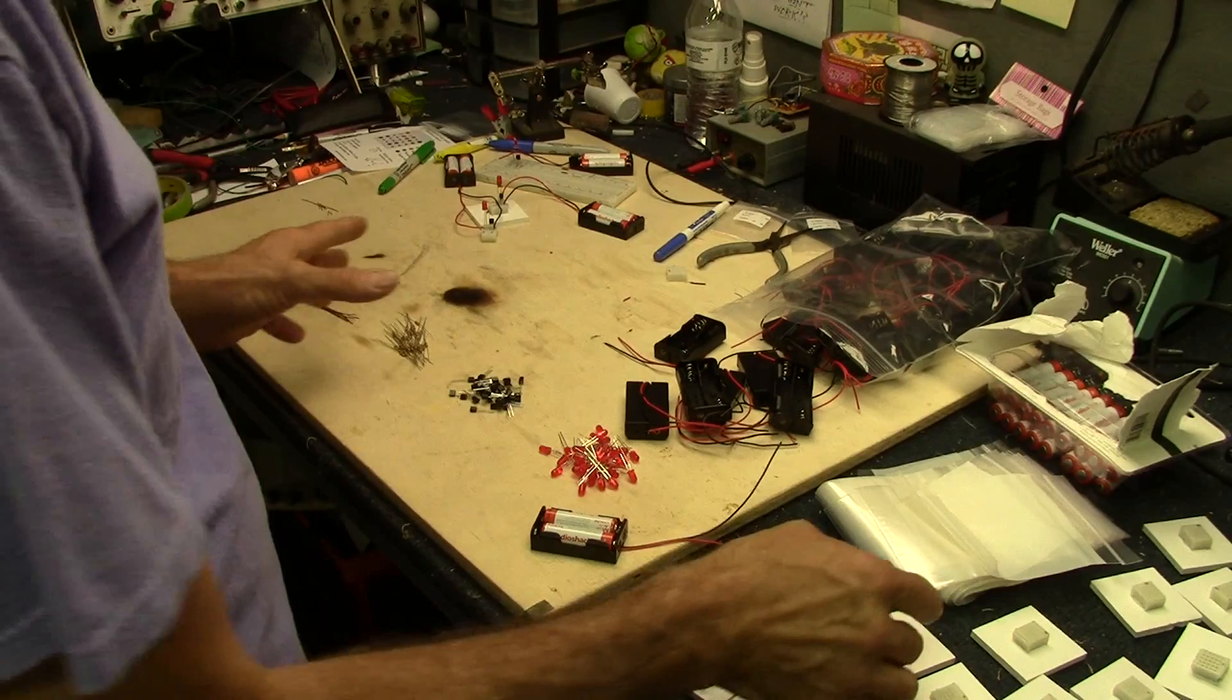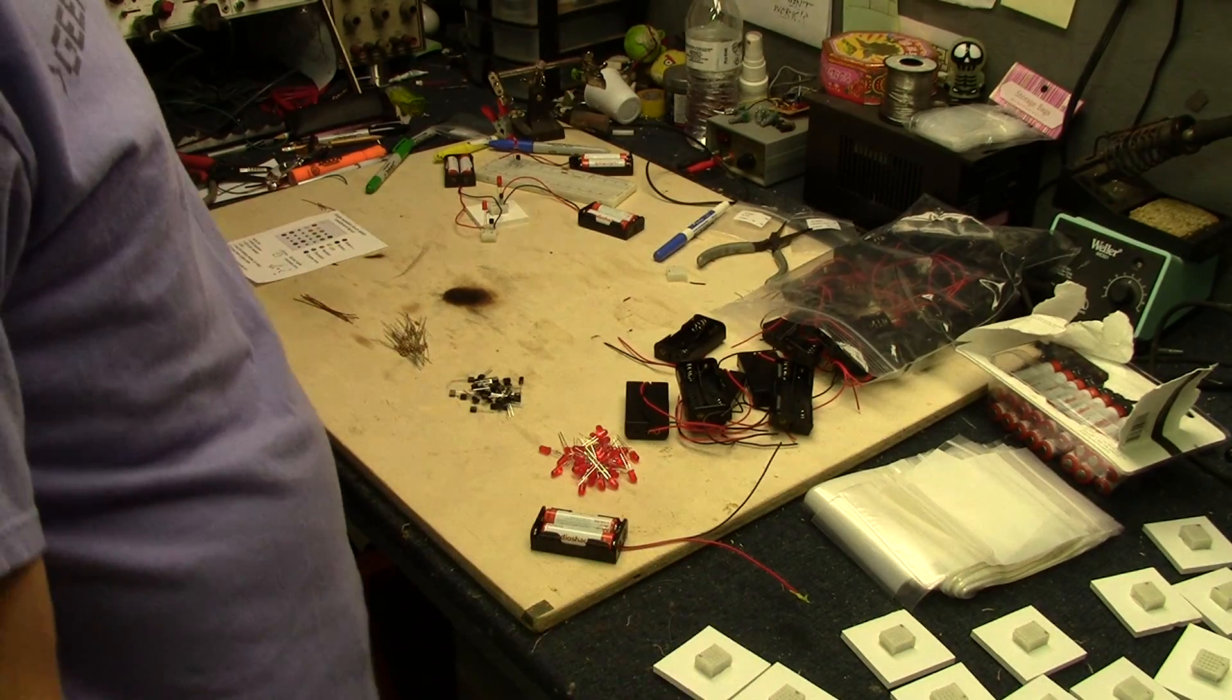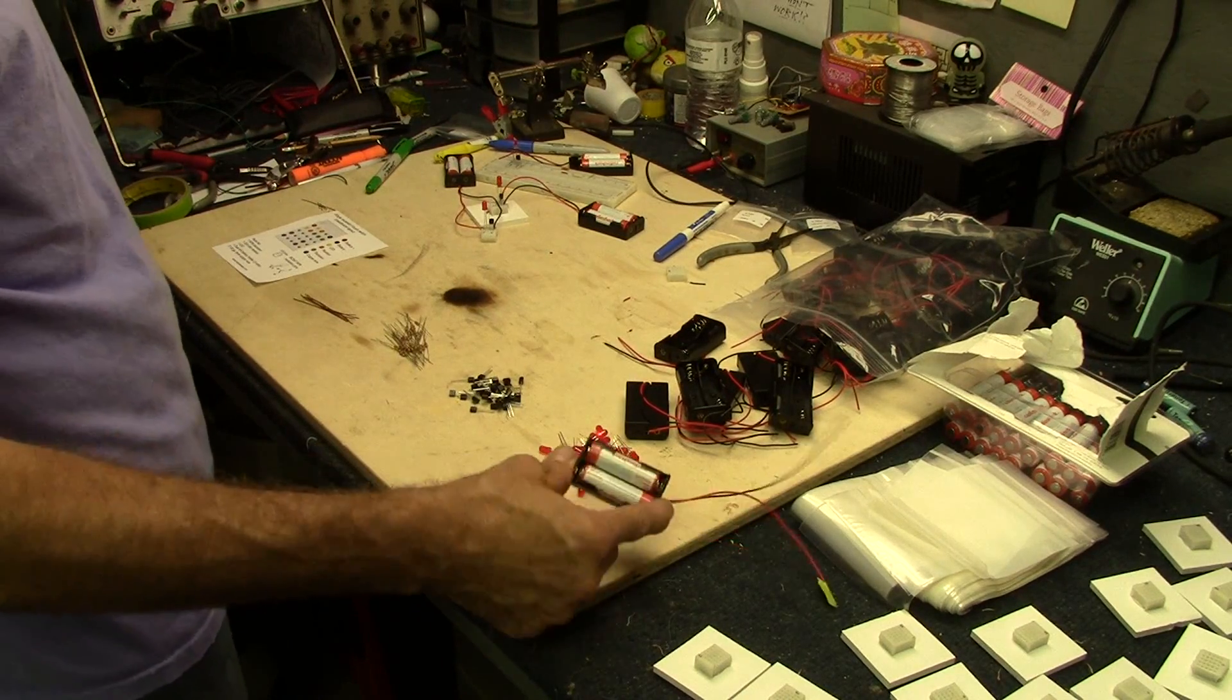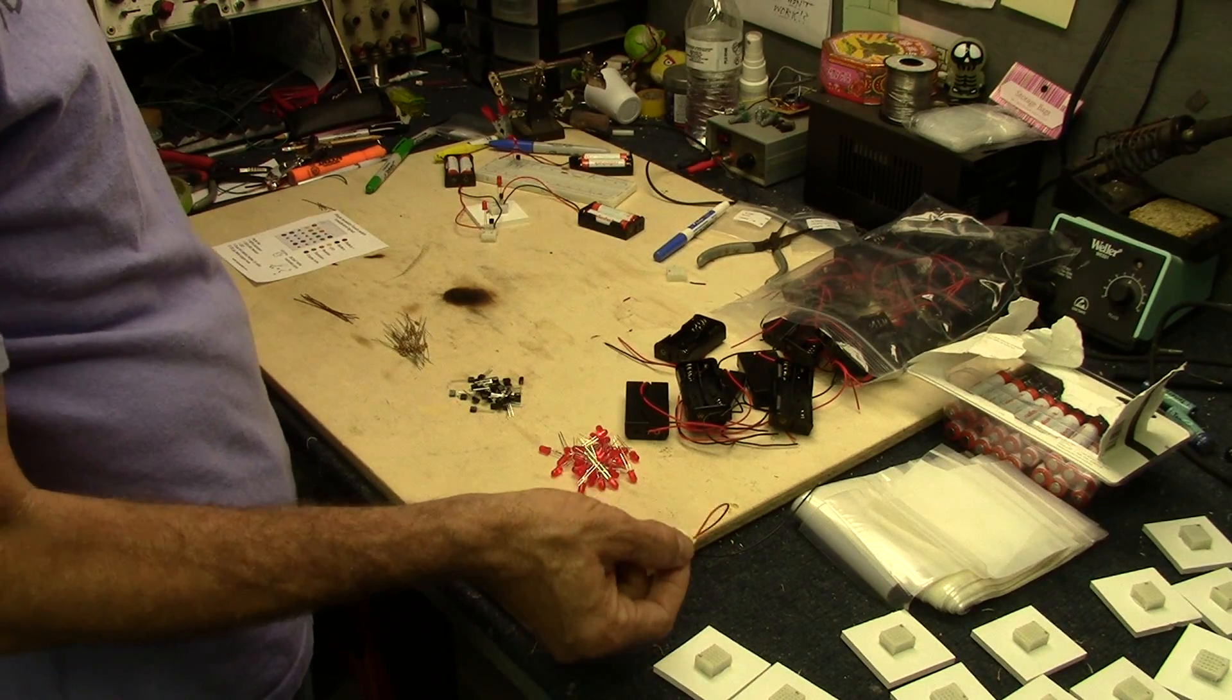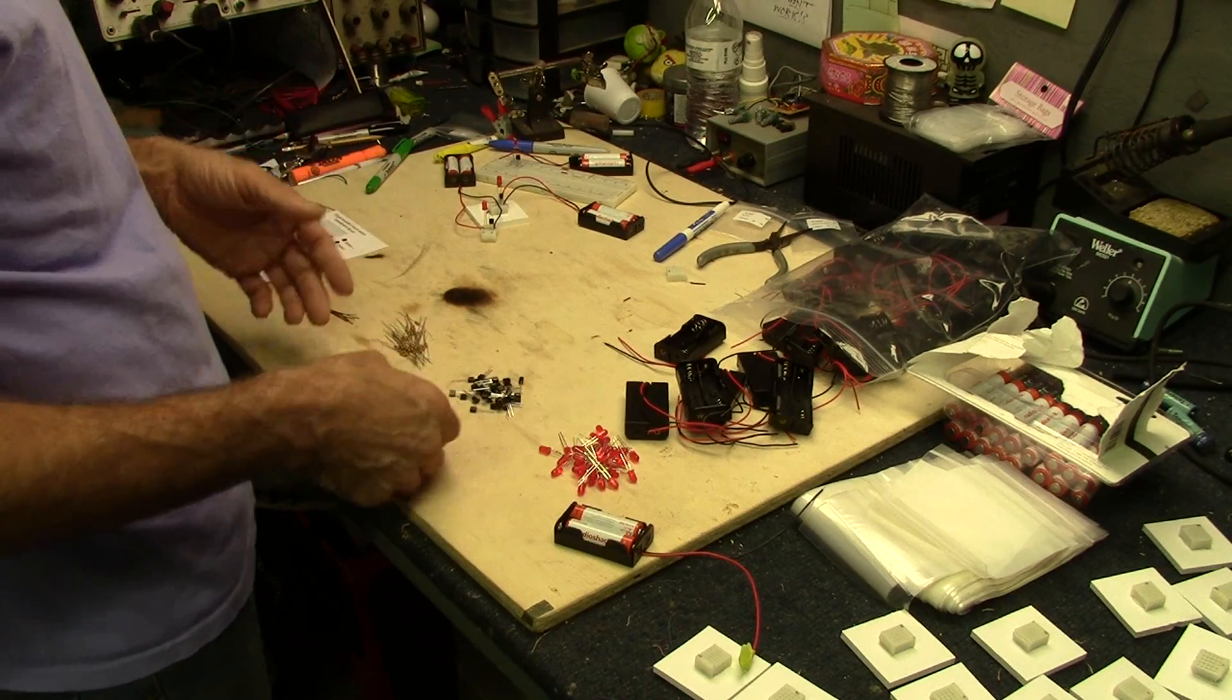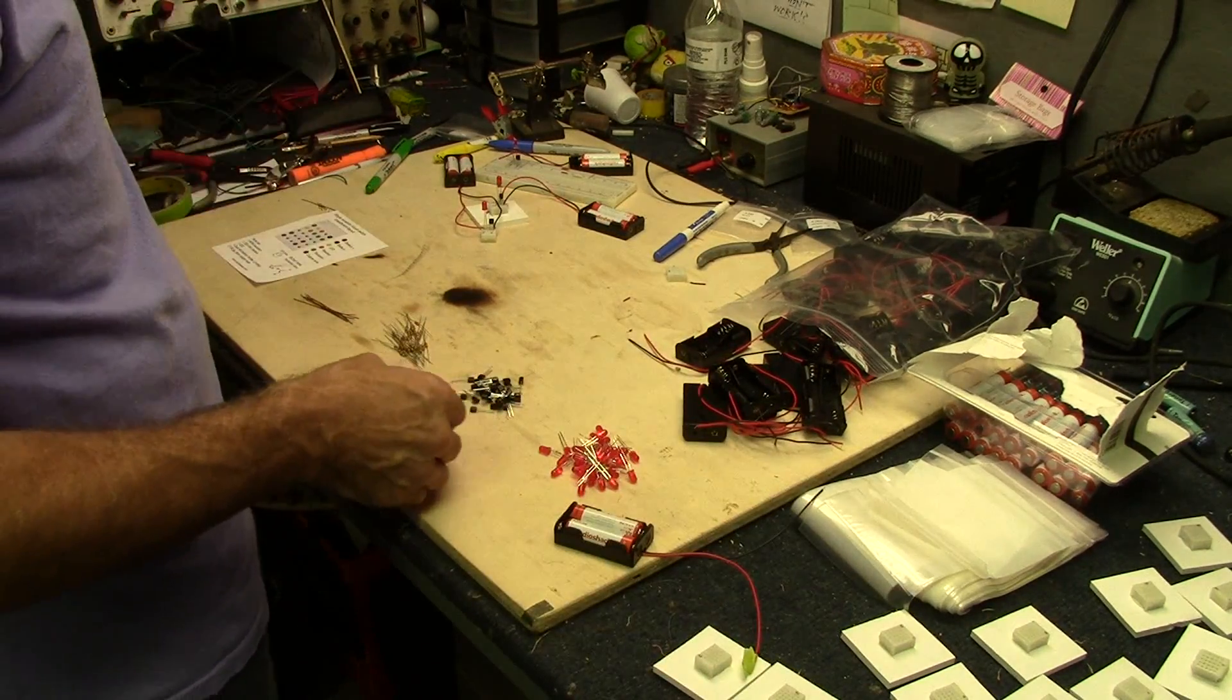So here we are ready to bag things up. Got bags here, and as we go down the line, I've got the breadboards, got the battery packs and the batteries. I'm going to load up the batteries into the battery pack, and then just tape the lead for the positive. That way they don't short out. If they're in there rattling around in the bag, they could potentially short out, possibly damage one of the components. We don't want that to happen. So we'll just move down the line, assembly line style, and then we'll just put everything into the bag.